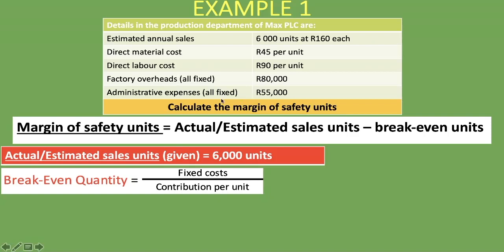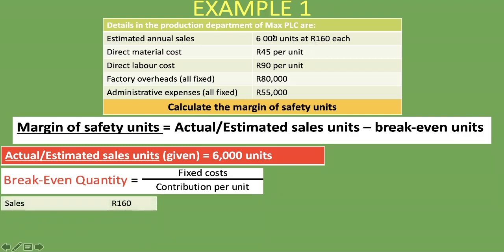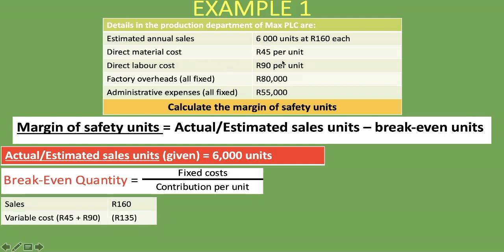Now we have to calculate our contribution per unit, which is calculated by taking the sales minus the variable costs. Our sales is 160 rand — as you can see, estimated annual sales is 6,000 units at 160 rand. Our variable cost is made up of our direct material cost of 45 rand and our direct labor cost of 90 rand, giving us a variable cost of 135 rand, which is 45 plus 90.